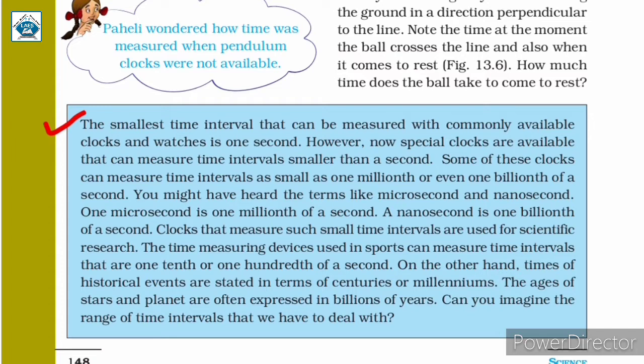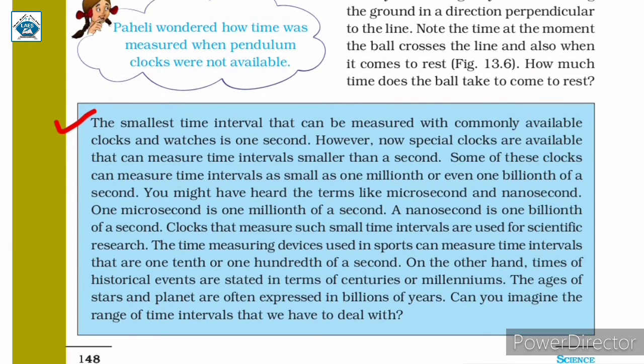The time measuring devices used in sports can measure time intervals that are 1 tenth or 1 hundredth of a second. On the other hand, times of historical events are stated in terms of centuries or millenniums. The ages of stars and planets are often expressed in billions of years. Can you imagine the range of time intervals that we have to deal with?